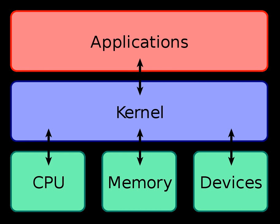A monolithic kernel, while initially loaded with subsystems that may not be needed, can be tuned to a point where it is as fast as or faster than one specifically designed for the hardware. Modern monolithic kernels, such as those of Linux and FreeBSD, feature the ability to load modules at runtime, thereby allowing easy extension of the kernel's capabilities as required, while helping to minimize the amount of code running in kernel space. Since there is less software involved it is faster, and as it is one single piece of software it should be smaller both in source and compiled forms.